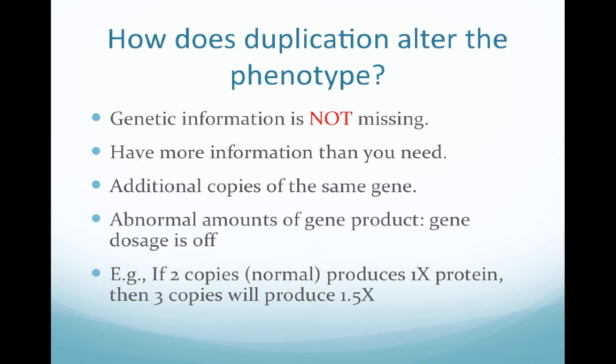Duplication can alter the phenotype in different ways. Note that genetic information is not missing — we actually have more information than needed due to additional copies of the same gene. The abnormal amounts of gene product created by the duplication mutation result in the gene dosage being off. A normal genotype with two copies might produce a 1x amount of protein, while three copies could produce 1.5 times the amount, and that excess protein can cause mutations at the phenotypic level.